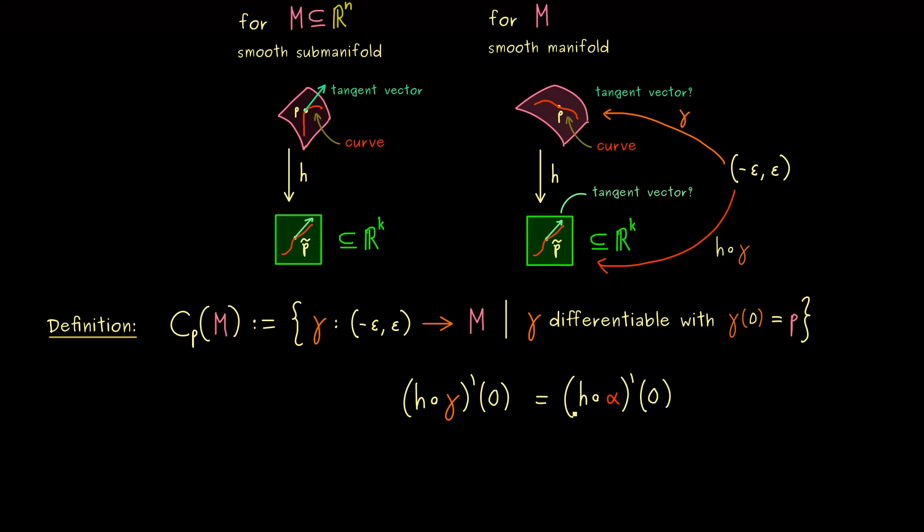Therefore, if we are just interested in the end result, both curves are exactly the same for us. We don't have to distinguish between both curves, because in the end they give us the same tangent vector anyway. So for a precise definition, we would say that gamma and alpha are equivalent to each other.